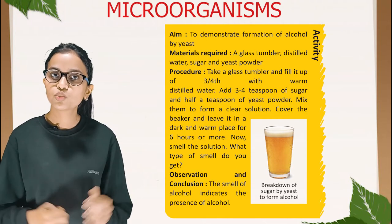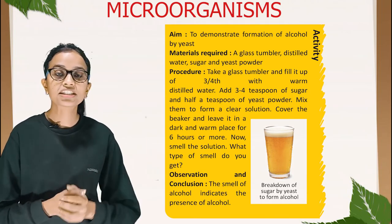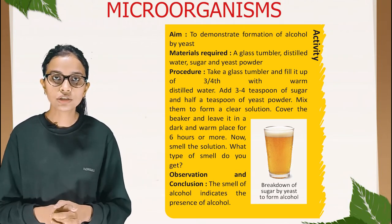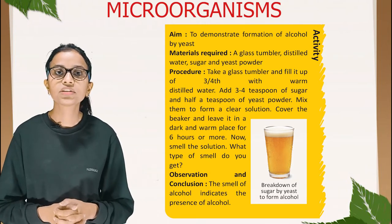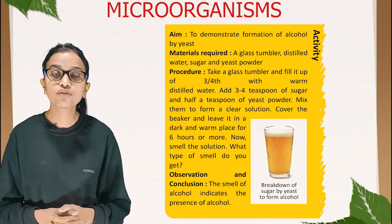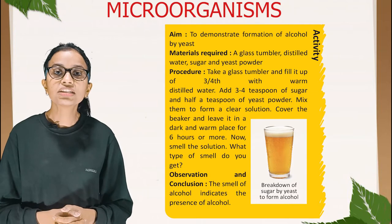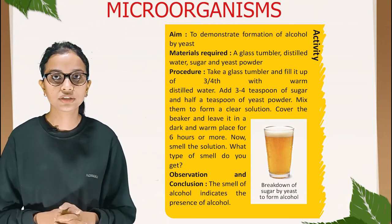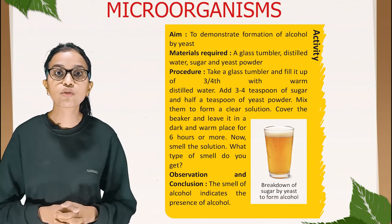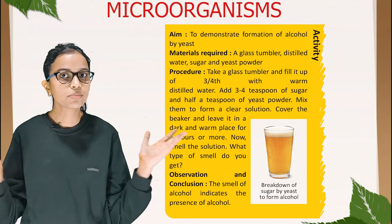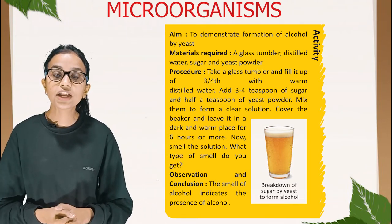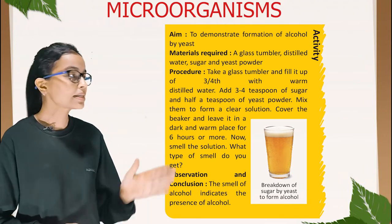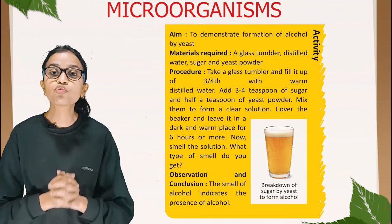Activity: the aim is to demonstrate the formation of alcohol by yeast. Materials required: glass tumbler, distilled water, sugar, and yeast powder. Procedure: take a glass tumbler and fill three-fourths of it with warm distilled water. Add three to four teaspoons of sugar and half a teaspoon of yeast powder. Mix to form a clear solution. Cover the beaker and leave it in a dark and warm place for six hours or more. Then smell the solution. Observation: the smell of alcohol indicates the presence of alcohol. This picture shows the breakdown of sugar by yeast to form alcohol.